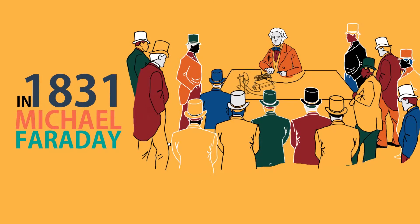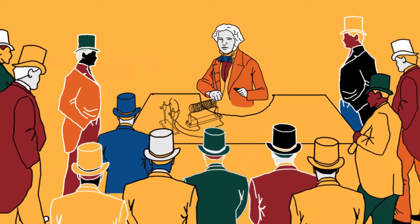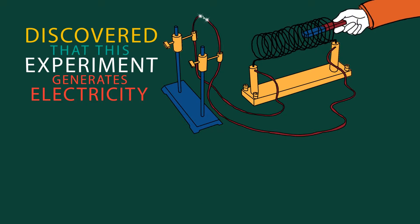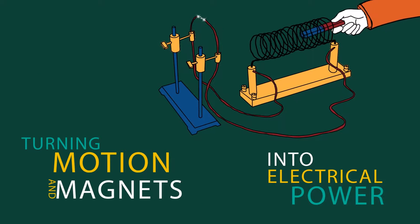In 1831, Michael Faraday showed that a magnet could generate electricity within a coil of wire. This amazing experiment turned motion and magnets into electrical power.